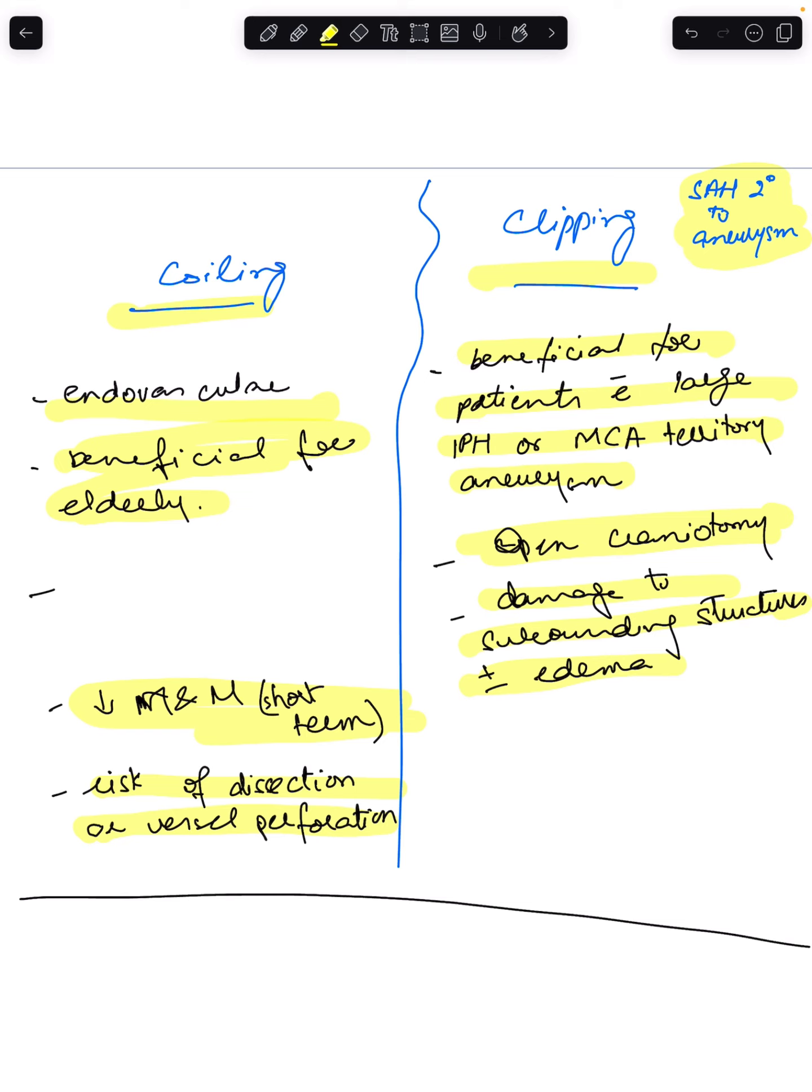The risks: as discussed, coiling has a risk of dissection or vessel perforation while clipping has the risk of damage to the surrounding structures or edema.